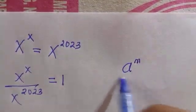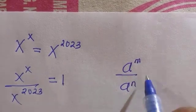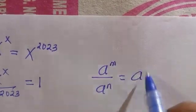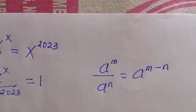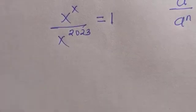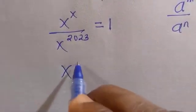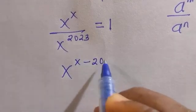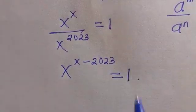Considering this rule: a raised to power m divided by a raised to power n equals a raised to power m minus n. Therefore we have X raised to power X minus 2023 equals 1.